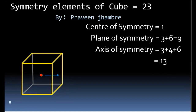In this part we will discuss the symmetry elements in a cube. The total symmetry elements for a cube is equal to 23. Symmetry elements involve all types of symmetries present in a cube, including center of symmetry, plane of symmetry, and axis of symmetry. The sum of all kinds of symmetries is equal to 23.